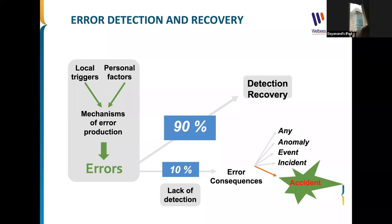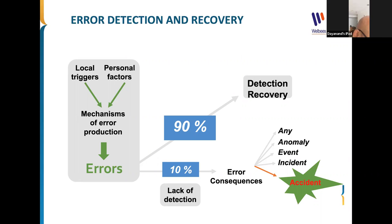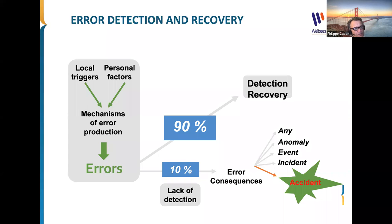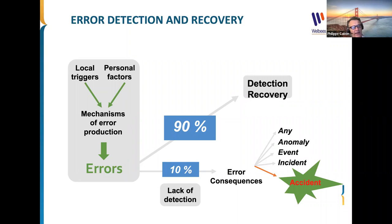So the distinction between error and deliberate action — which can be a violation — is important. How do we address violations versus errors? And can we use the 80/20 formula to identify many of the errors or hazards during investigation? The 80/20 formula — meaning 80 percent of accidents due to human errors — is that right?